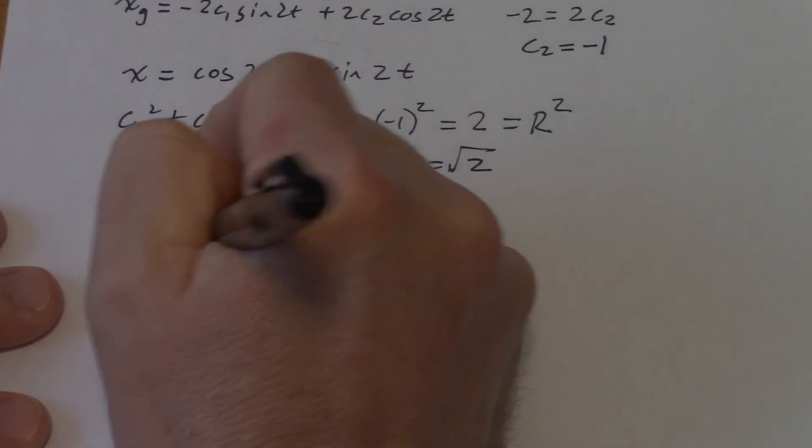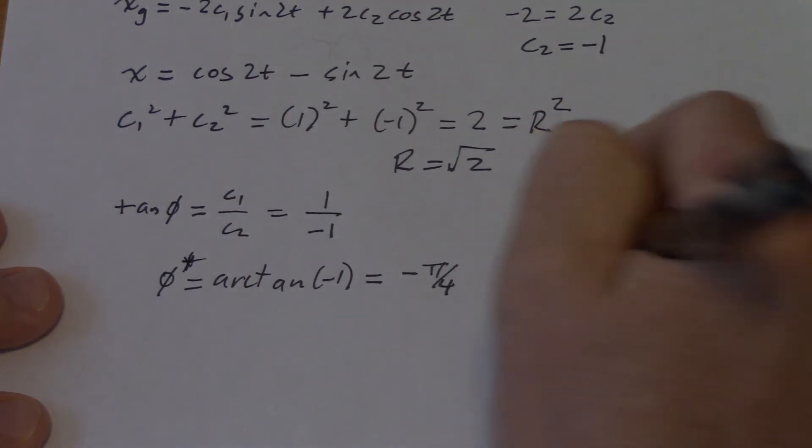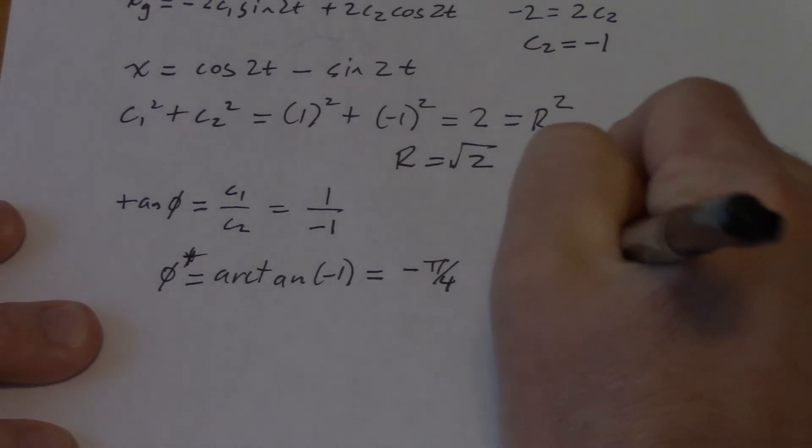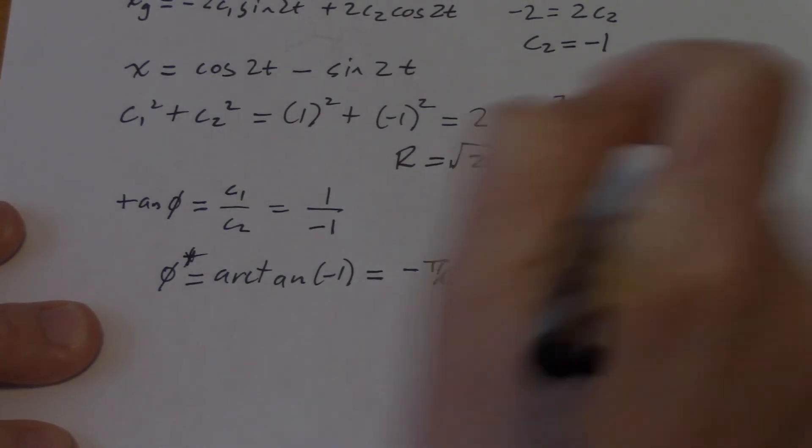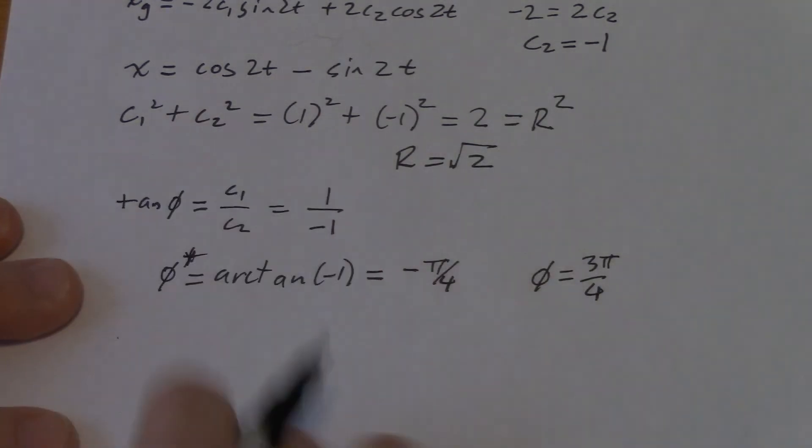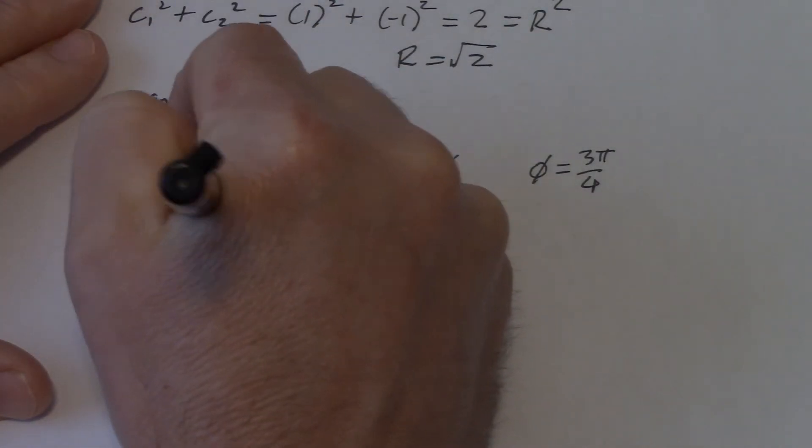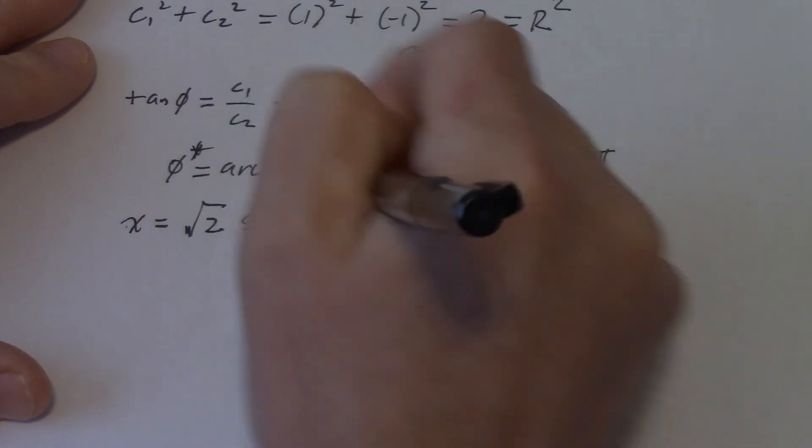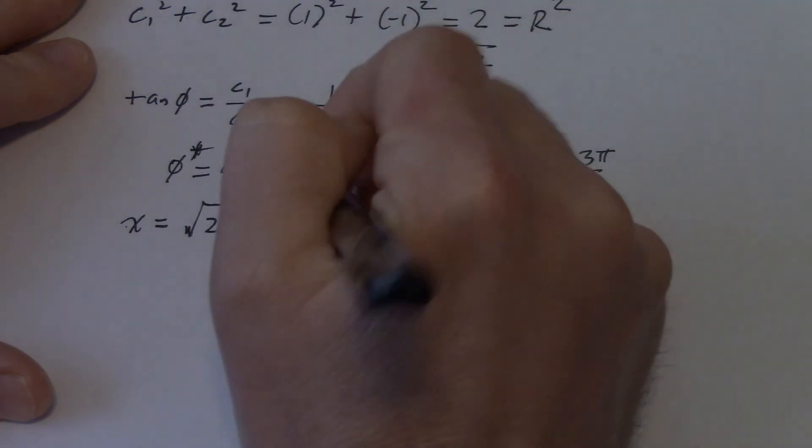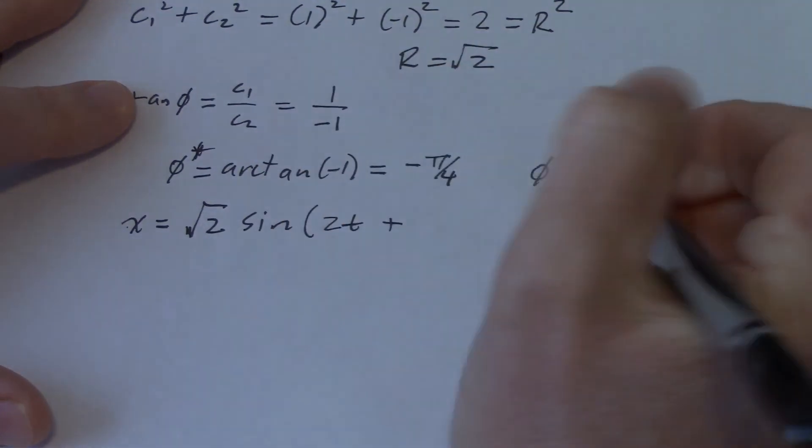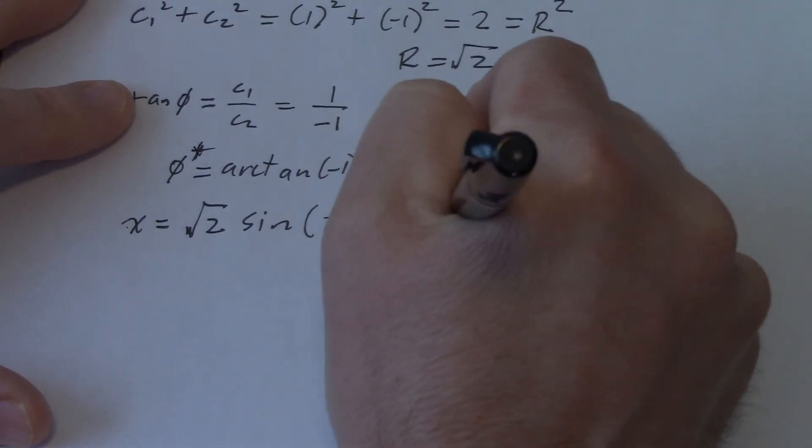So let's write everything down. So let me say phi star is that. Phi, what do we get when we add pi to that? 3 pi over 4? Yeah. Okay, so my solution here in this form is root 2 sine of 2t plus 3 pi over 4.